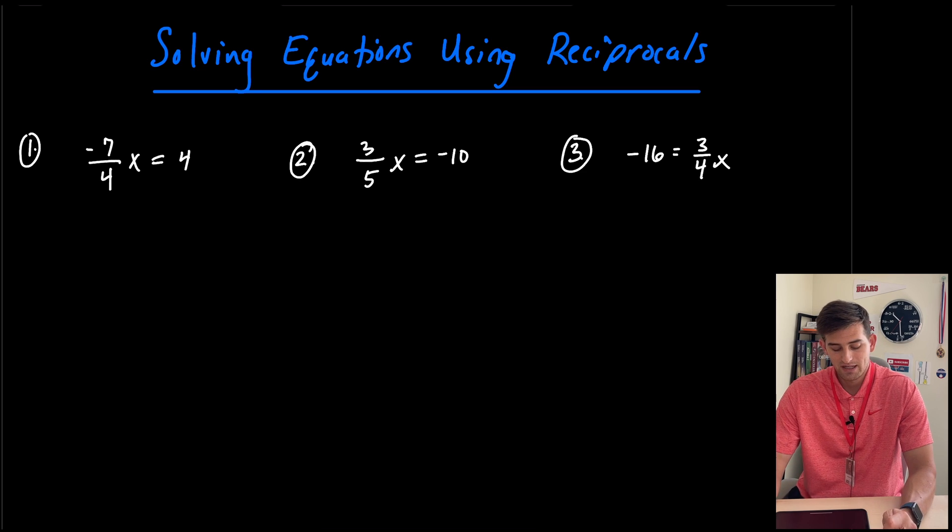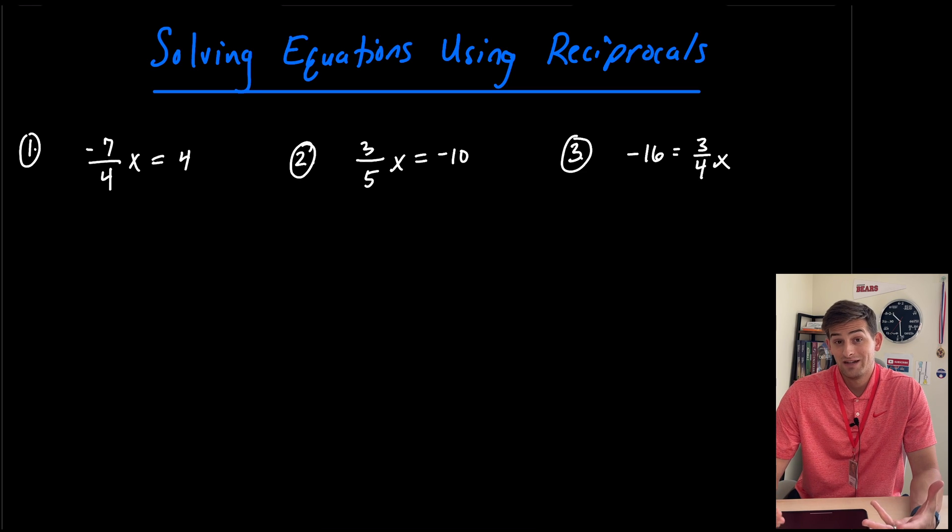We have negative seven fourths times x is equal to four. So when I look at this I think, oh I need to divide both sides by negative seven over four.